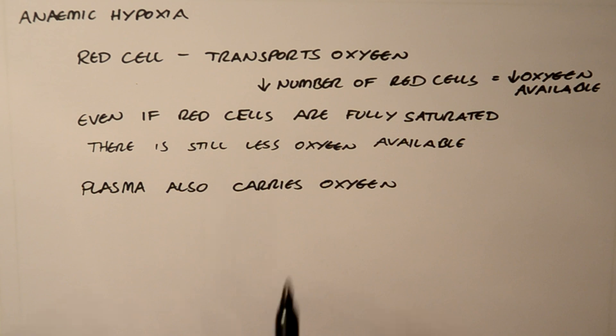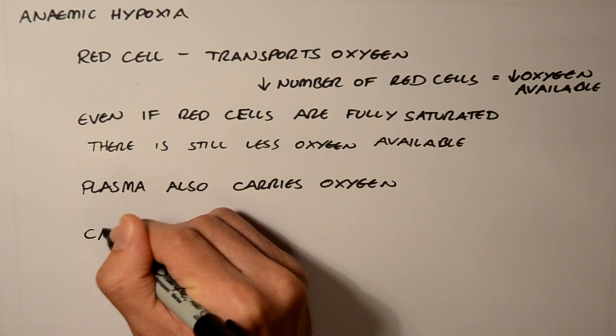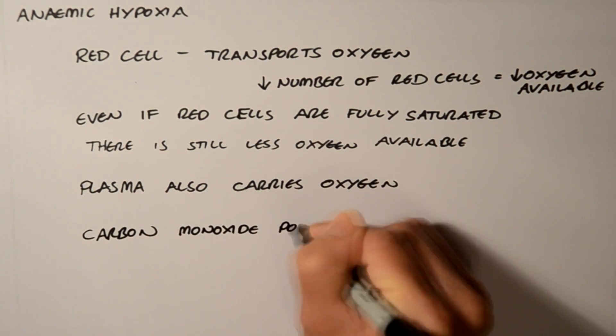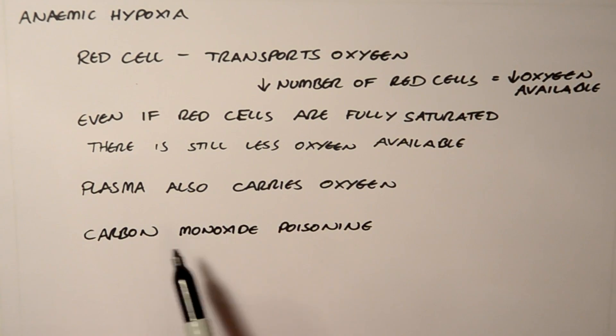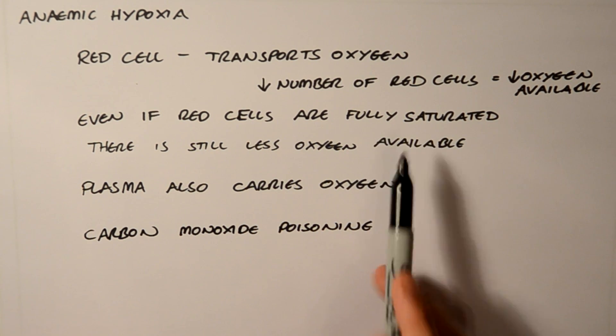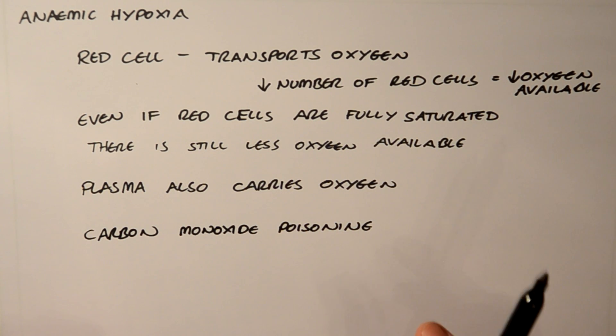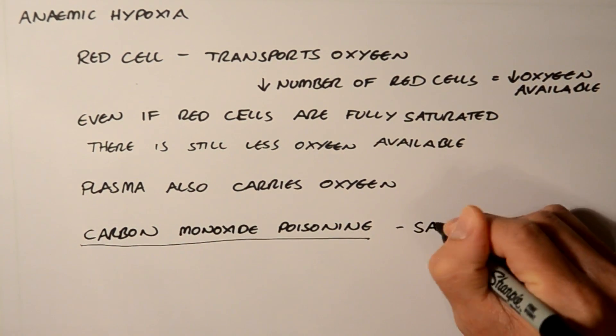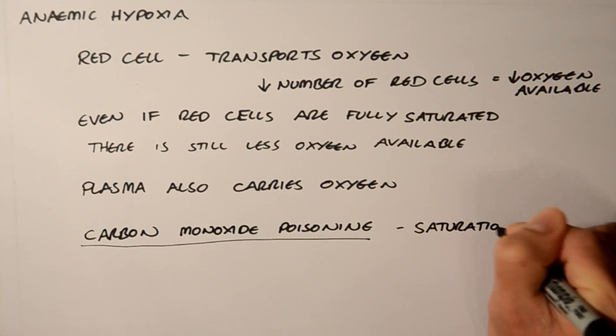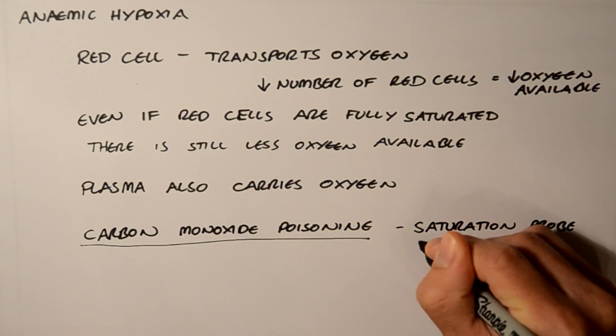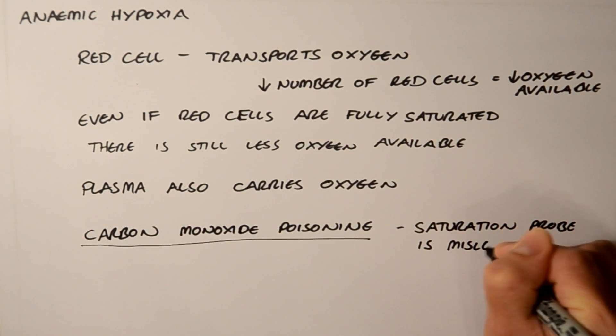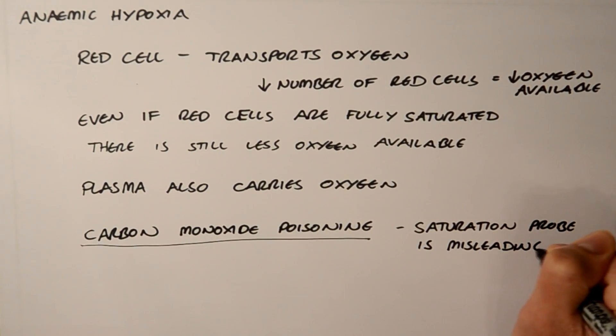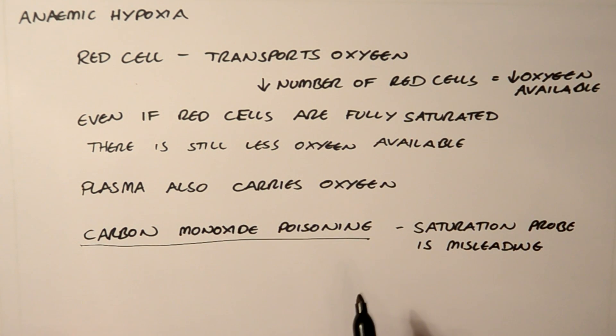The last special type of anemic hypoxia is actually carbon monoxide poisoning. Always remember this. This brings us back to the fully saturated part when you're looking at the oxygen saturation probe. In carbon monoxide poisoning, the oxygen probe is misleading.